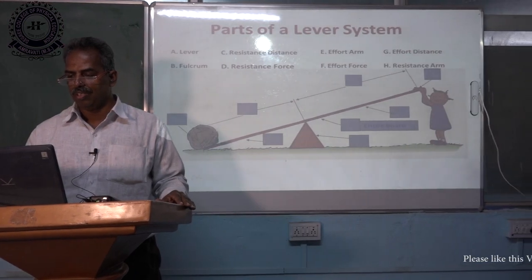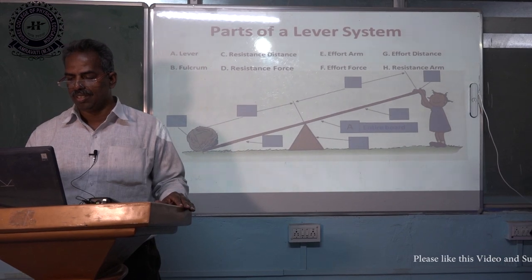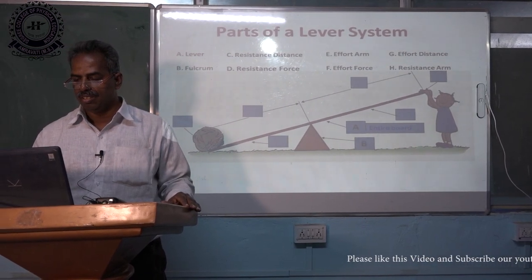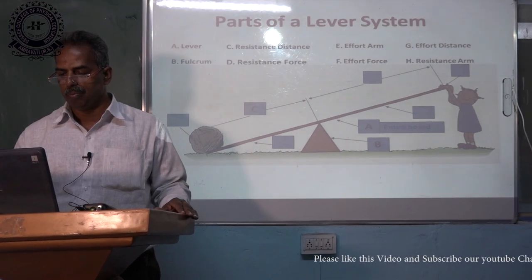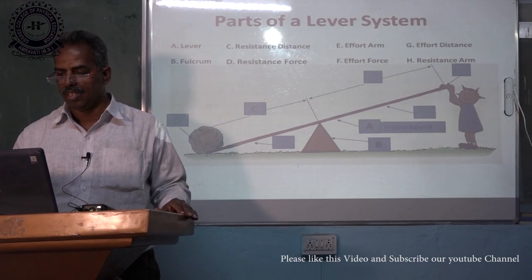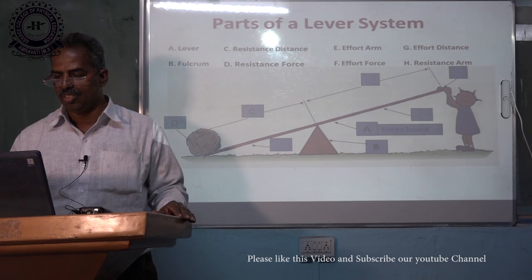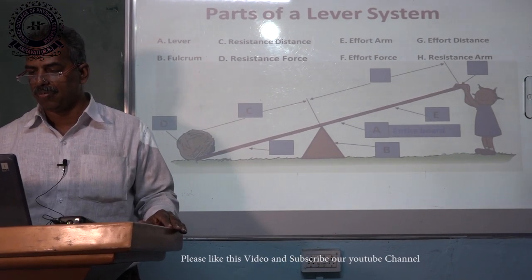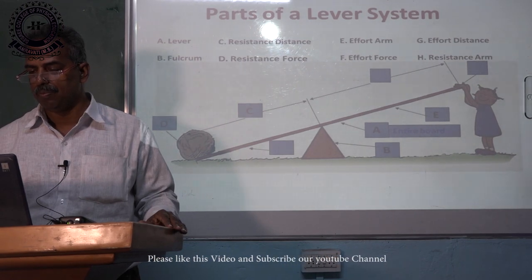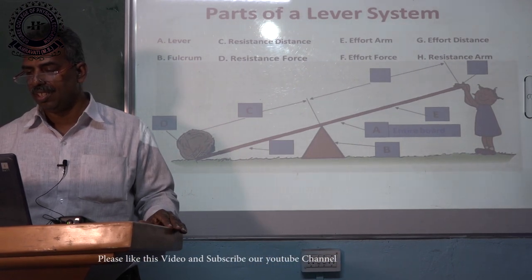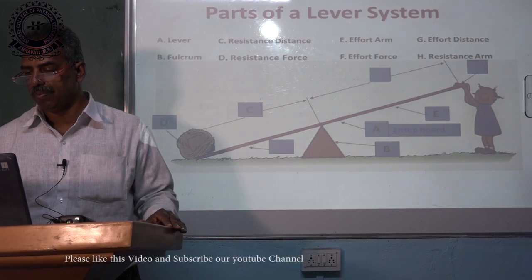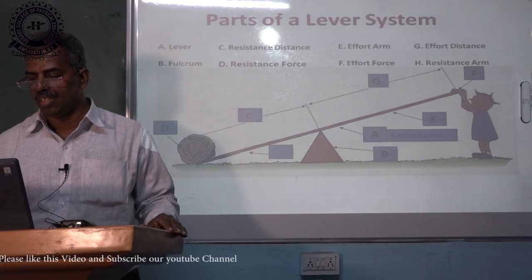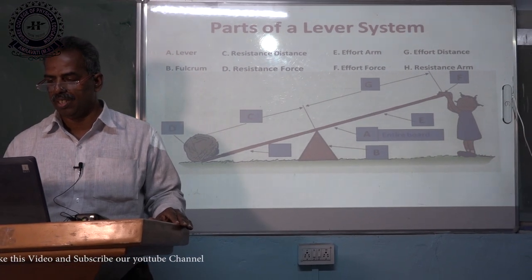Parts of the lever system: first, the entire board shows a lever, then the fulcrum, then resistance distance, resistance force, effort arm, effort force, effort distance, and resistance arm. From this you can understand the different parts of the lever system.